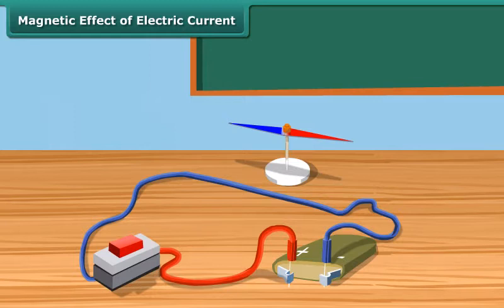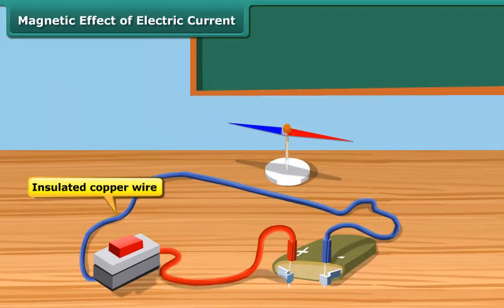Take a thin insulated copper wire and fix it in the north-south direction. Place a compass needle, which is a tiny magnet, under the wire.